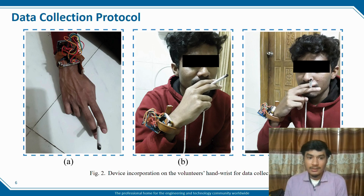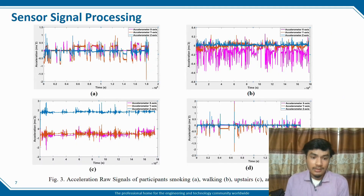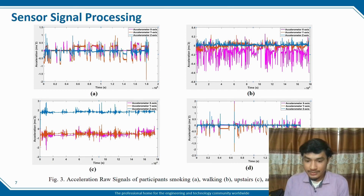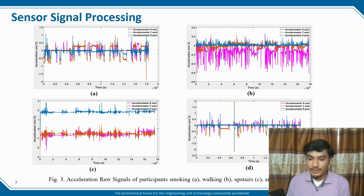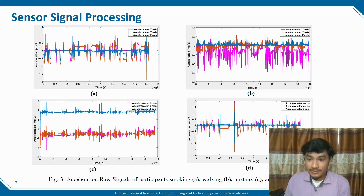After collecting data, we applied a 0.1 cutoff frequency high-pass filter to reduce noise. After reducing noise, we obtain: data A for smoking, data B for walking, figure C for upstairs, and figure D for downstairs. Here, the pink data is the x-axis, orange data is the y-axis, and blue data is the z-axis.